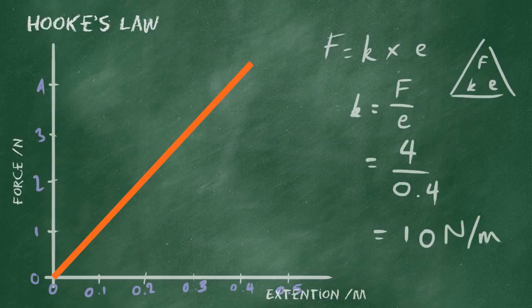That is a number expressing how stiff the spring is. If you put in 10 newtons, you will get 1 metre extension. A stiffer spring would need more newtons, so it might be 20 newtons per metre. 20 newtons for 1 metre.